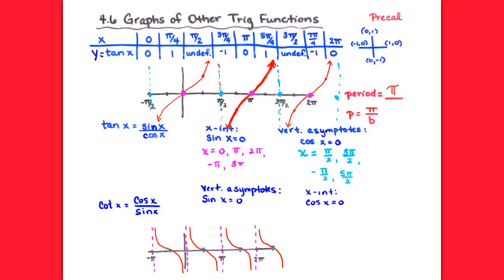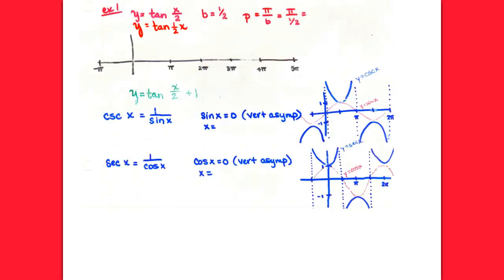The three graphs we work with most often are sine, cosine, and tangent. For those we will shift, reflect, change amplitude, change period, and all of those types of things. For the reciprocals — cotangent, secant, and cosecant — on a test or quiz I'll only ask you to do the base graph, just the original graph. On the homework we'll play around with altering them a little, but on a test or quiz, only the main graph.